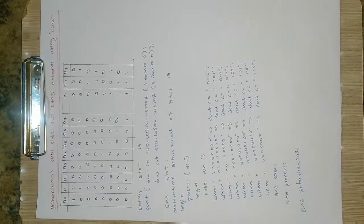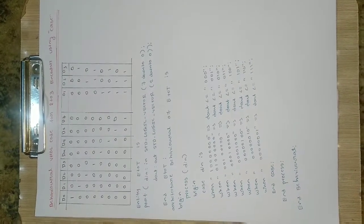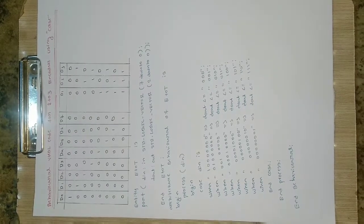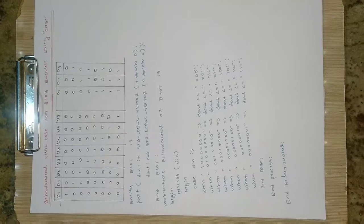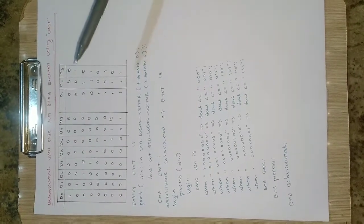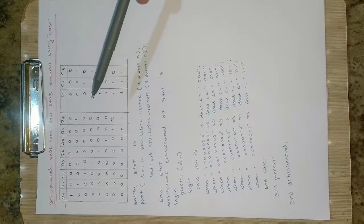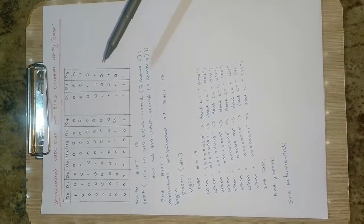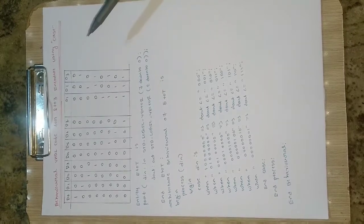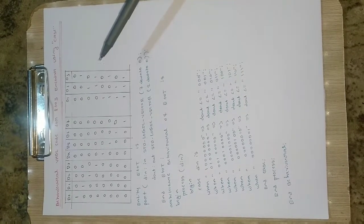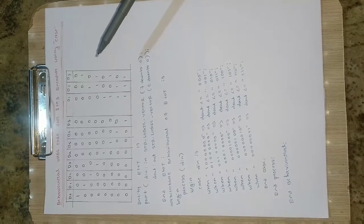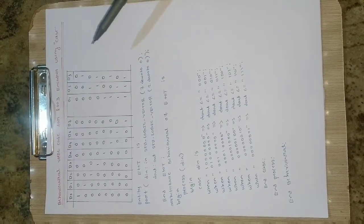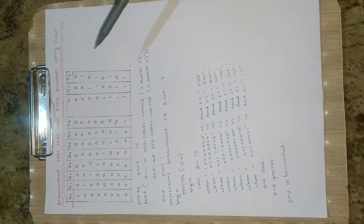Hey everyone, in this video we are going to see how to write the behavioral VHDL code for an 8-to-3 encoder using case statements. An encoder converts 8 bits into 3 bits, so it is basically used to compress the message. Instead of sending 8 bits we will be able to send only 3 bits and receive the 8 bits at the other side, so there is a low requirement of bandwidth. That's why encoders are used in wireless communication to compress the data and to reduce the use of frequency and bandwidth.